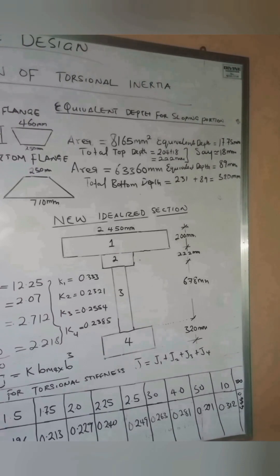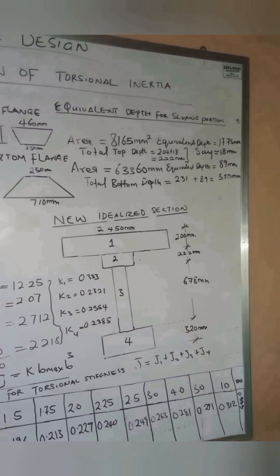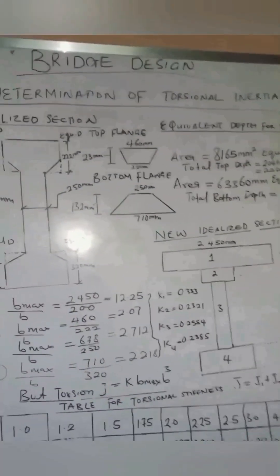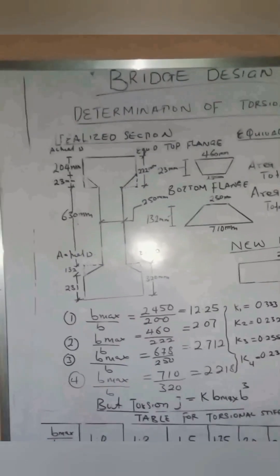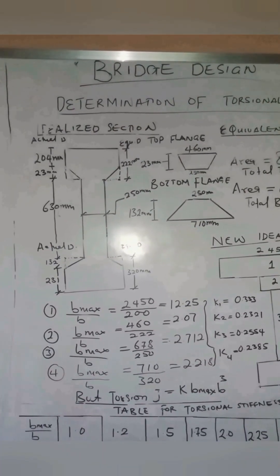By interpolation, we can obtain K1, K2, K3, and K4. Once these values are obtained, we plug them into the formula to calculate the total torsional inertia of the composite I-section. The total torsional inertia of the composite section will then be calculated.